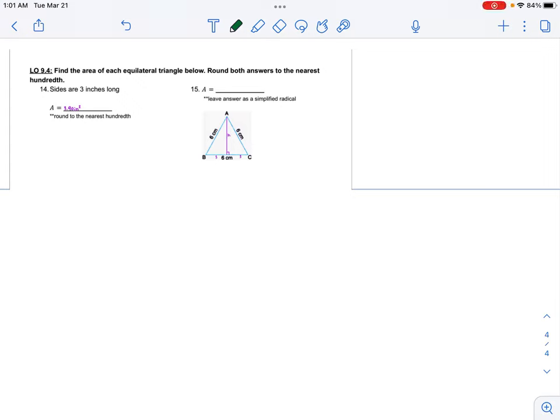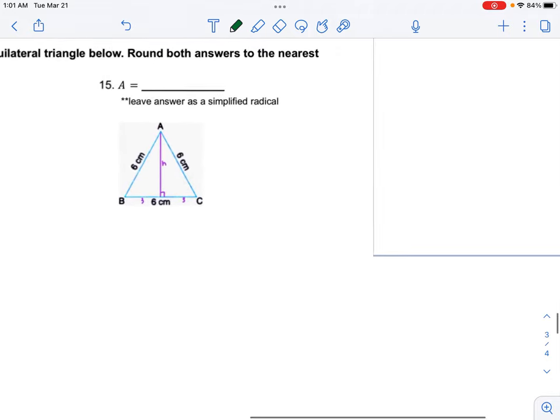Looking at number 15, the directions say find the area of each quadrilateral triangle below, round both answers to the nearest hundredth. I know on 15 here that this is a right angle. As you see here, I split my 6 into 3 and 3. I can do a squared plus b squared equals c squared to find my height.